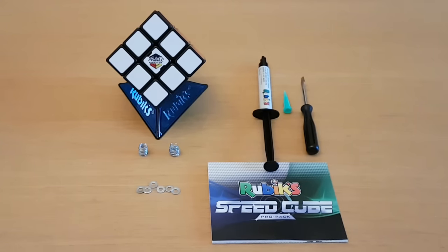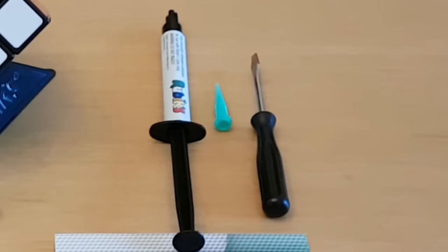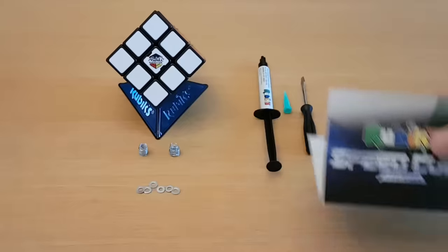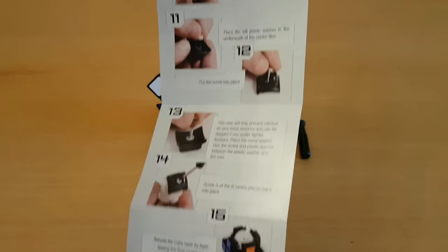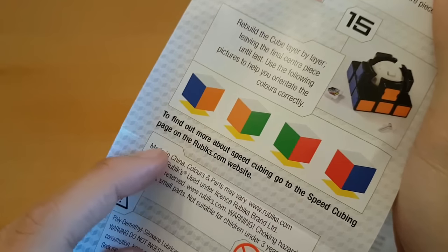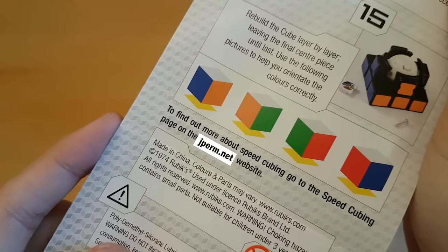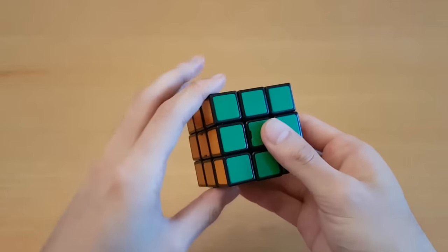Alright, all these customization tools, we have washers, springs, lube, a screwdriver, and a pro pack. Just what I needed. How to disassemble and reassemble along with instructions. More instructions on the back. Find out more about speedcubing, go to the speedcubing page on the jperm.net website. Alright, let's see if this is any good.